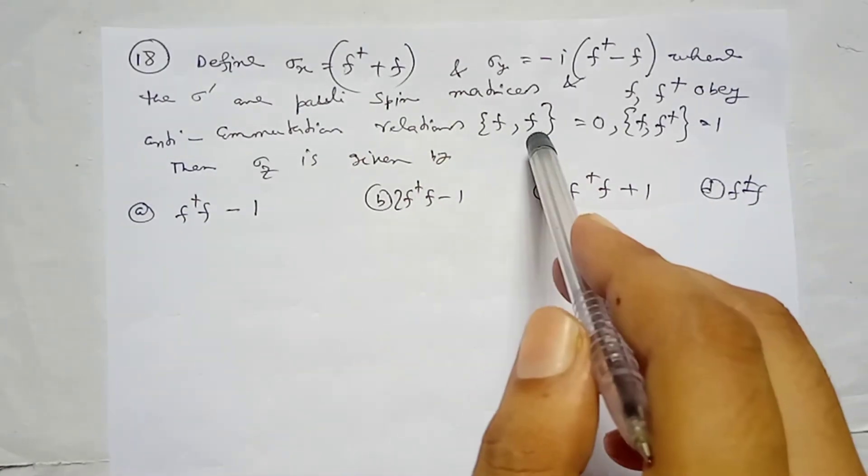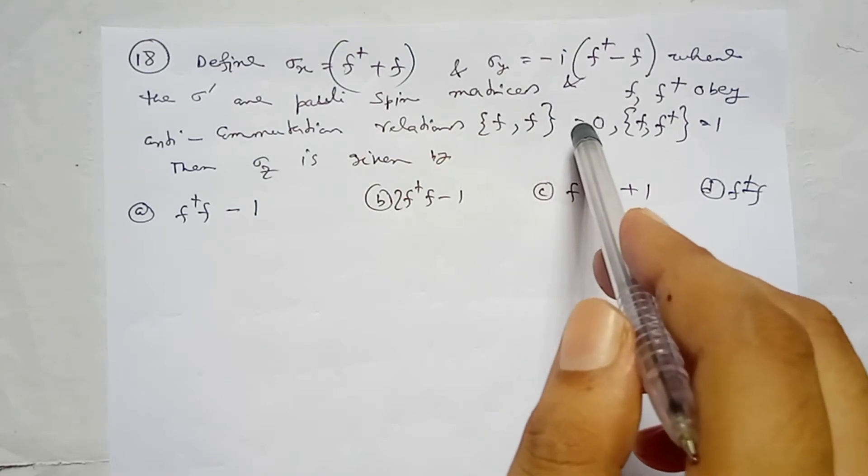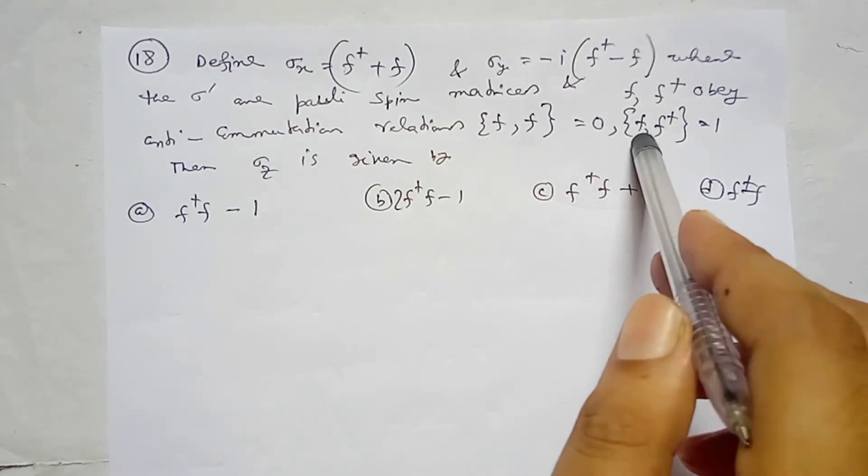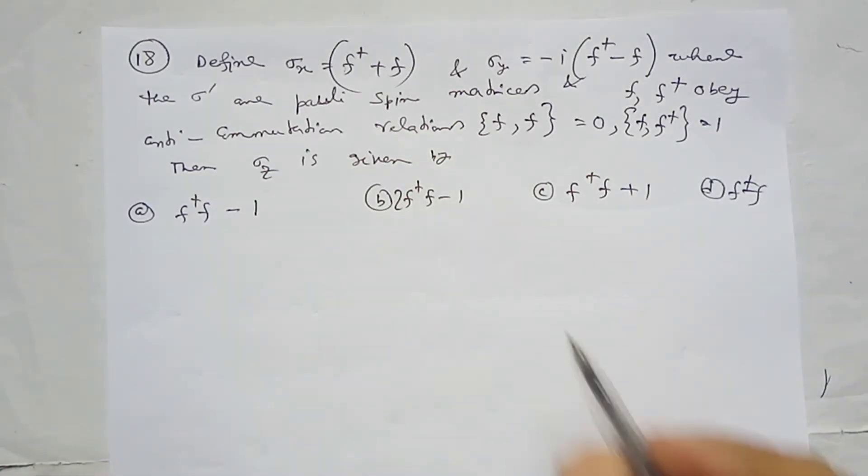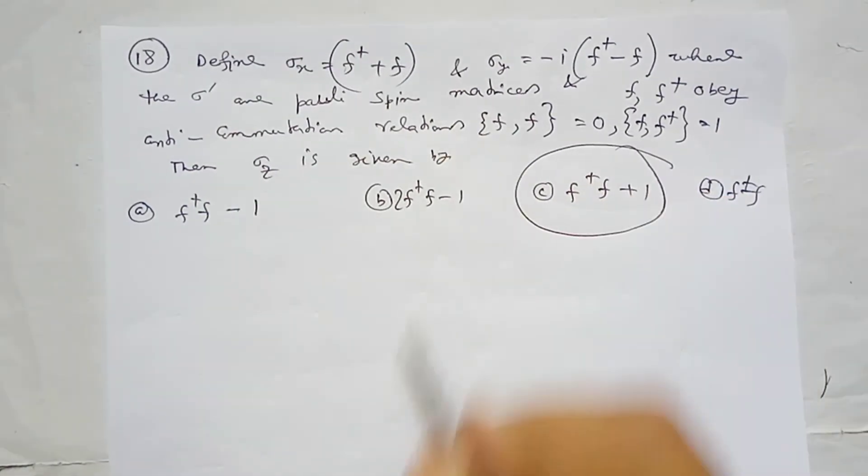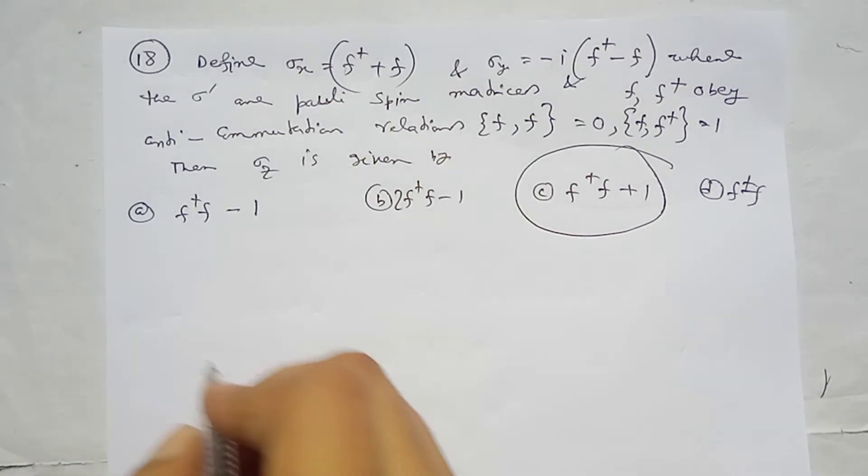The anti-commutator relations are: f anti-commutator with f equals 0, and f anti-commutator with f dagger equals 1. Then sigma z is given by...